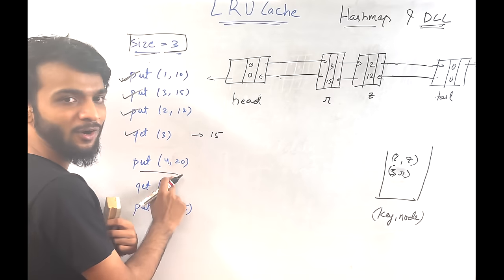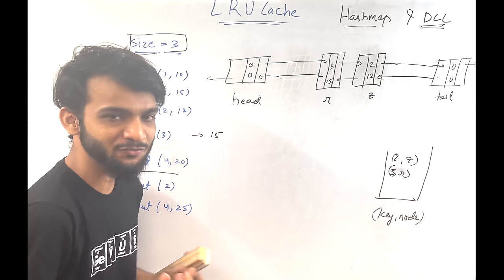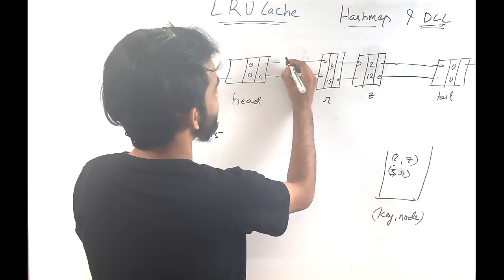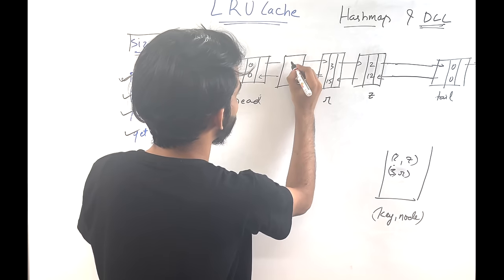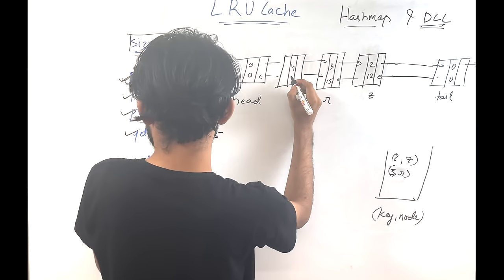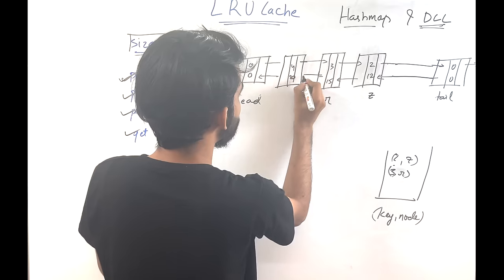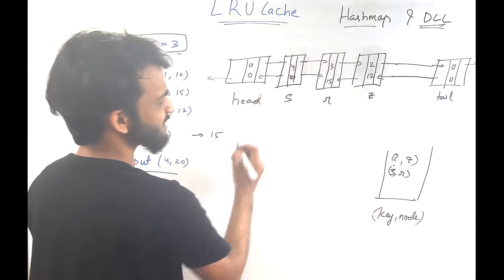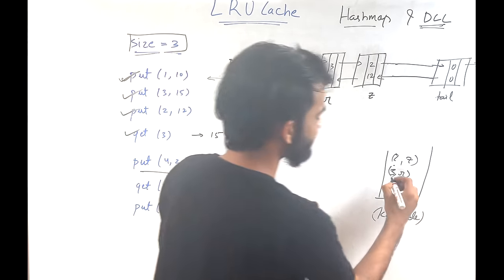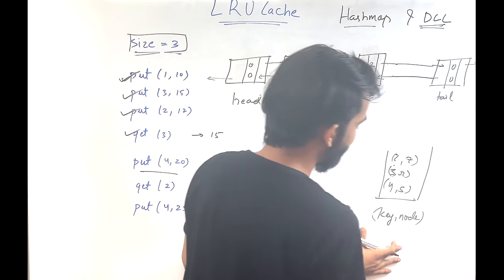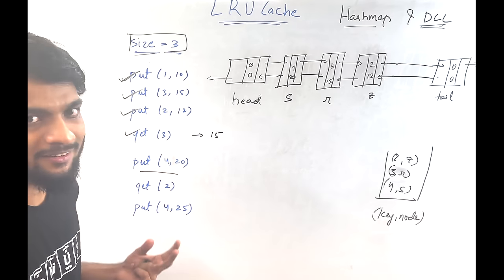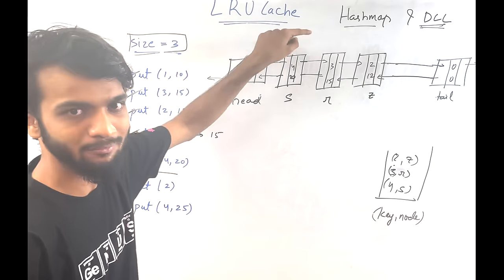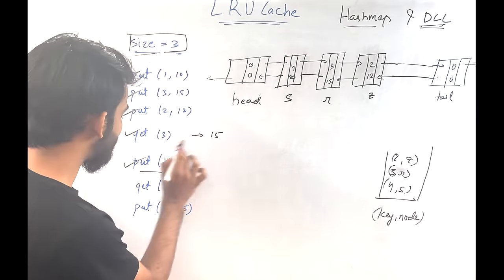After removing the least recently used node, space is freed. Now insert (4,20) right after head with a new address S. Store key 4 with address S in the hash map. The order is now: 4 most recently used, then 3, then 2. The order is maintained.